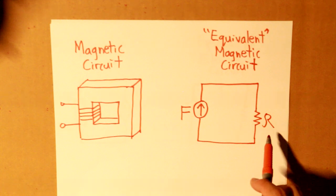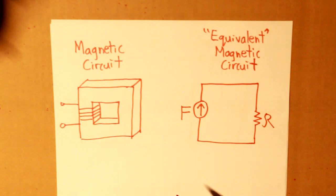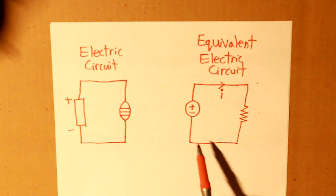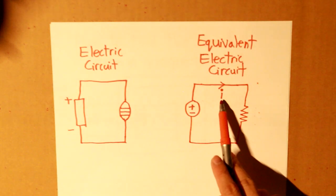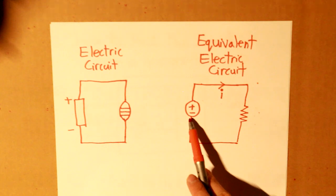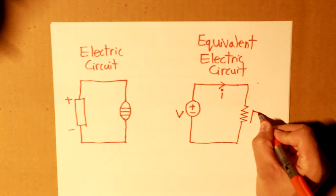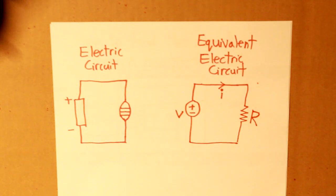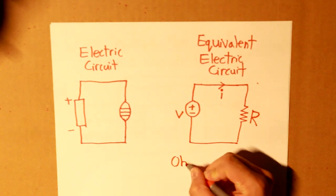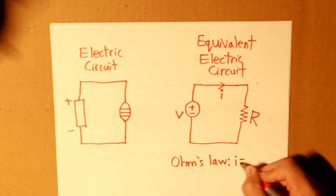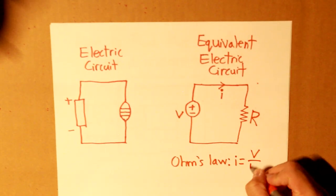And these two terms, if we apply the similar case to what we know about the electric circuit, where we have a current here and a voltage source here and a resistor here, we know that by Ohm's law, I is equal to V divided by R.